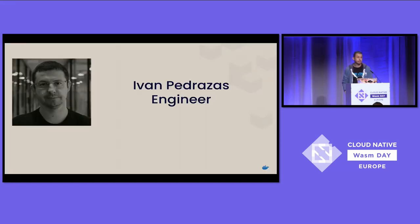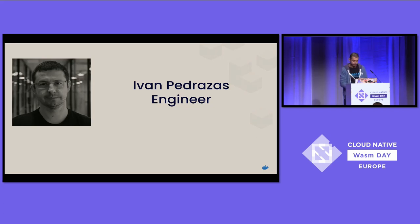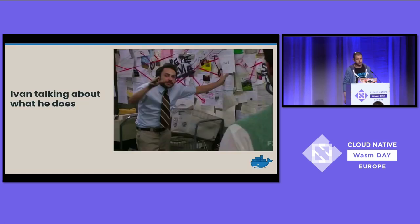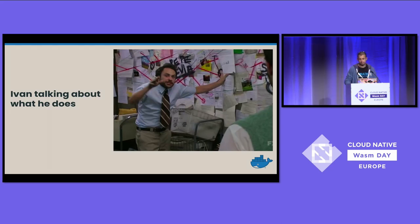My name is Ivan Pedrazas. I work for Docker as an engineer, in something we call Docker Labs, which is the research and development part of Docker. And this is what happens when people ask me what I do — I basically study complexity theory and why it's so hard to do things in software and in general.